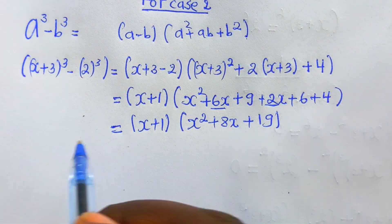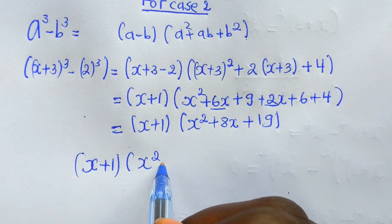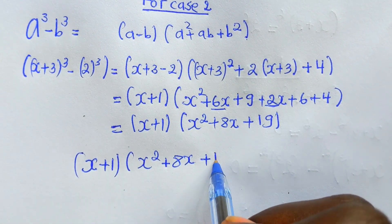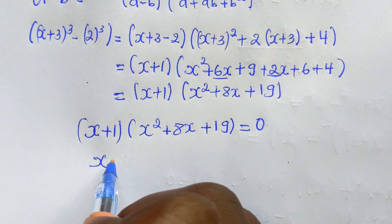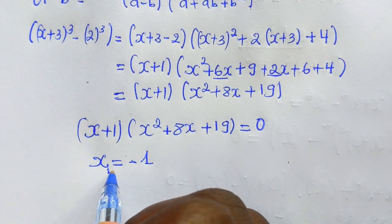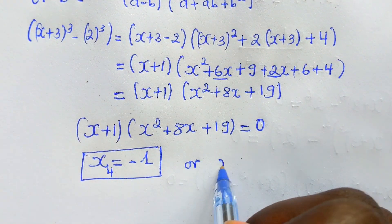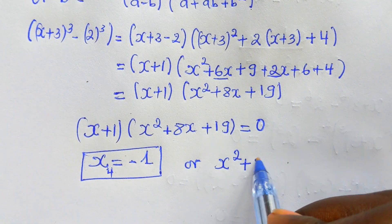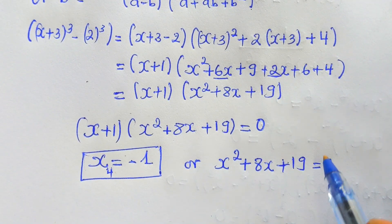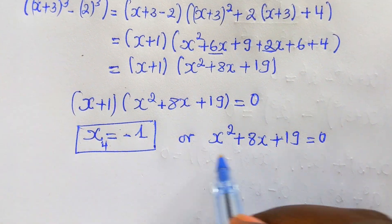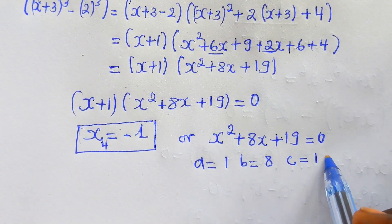Simplifying: (x+1)(x^2 + 8x + 19) = 0. Setting each factor to zero: x + 1 = 0 gives x4 = -1. For x^2 + 8x + 19 = 0, we have a = 1, b = 8, c = 19.